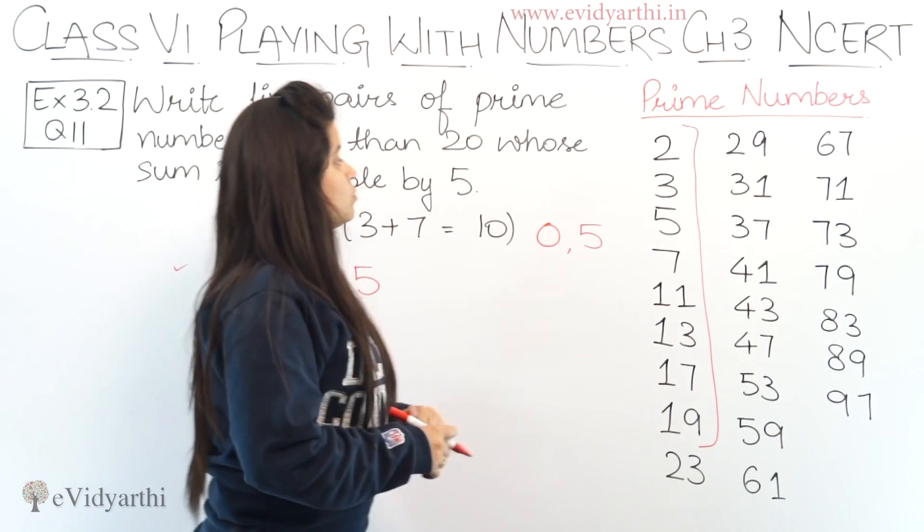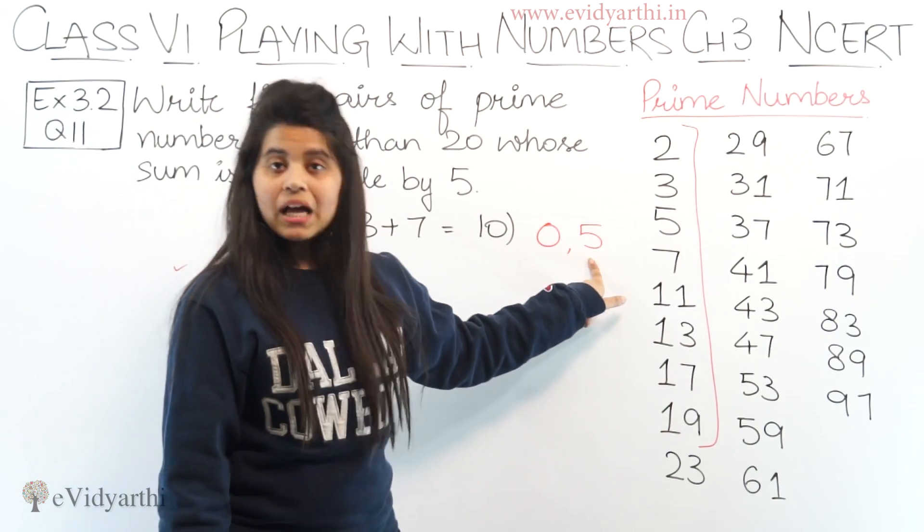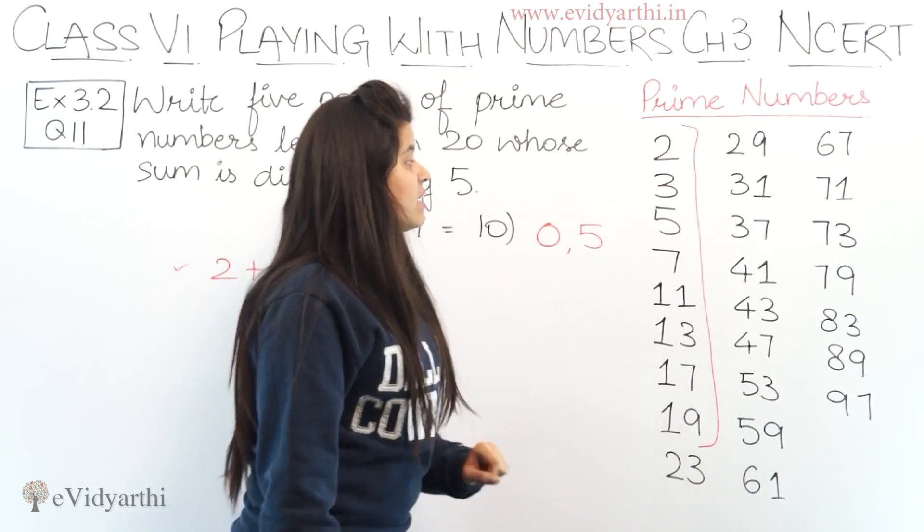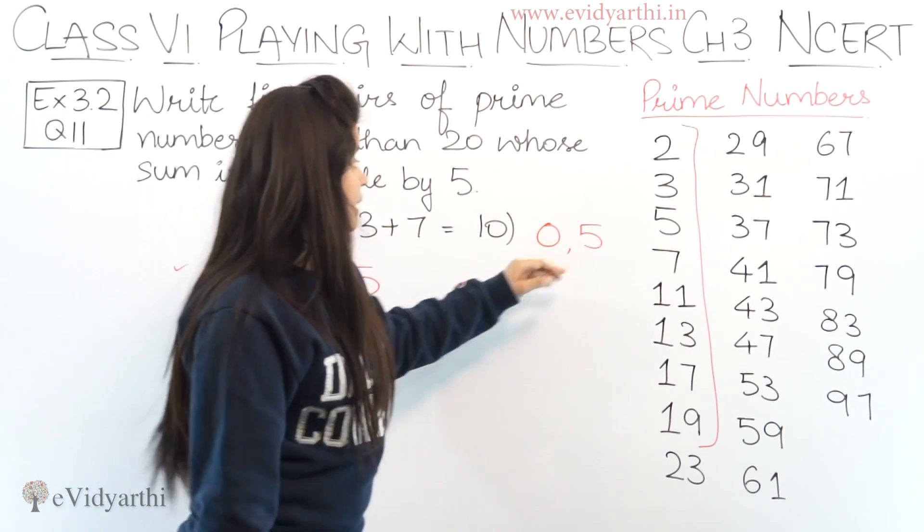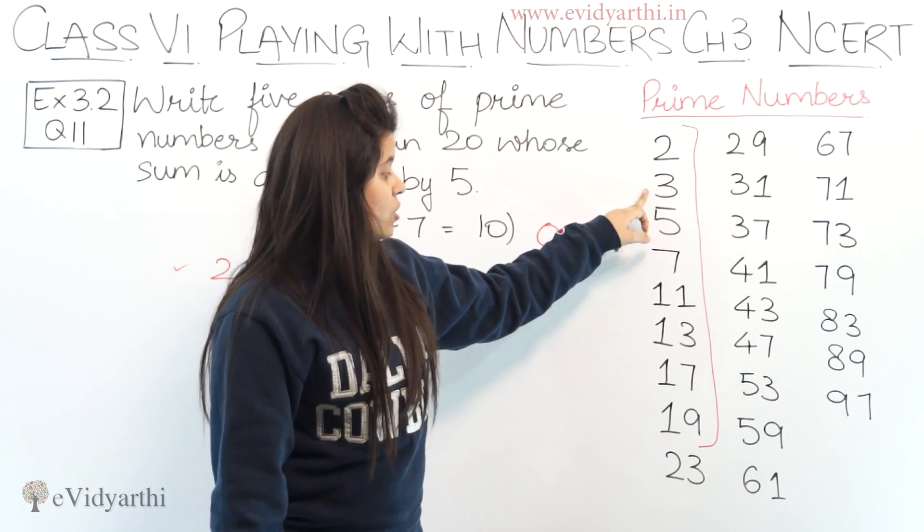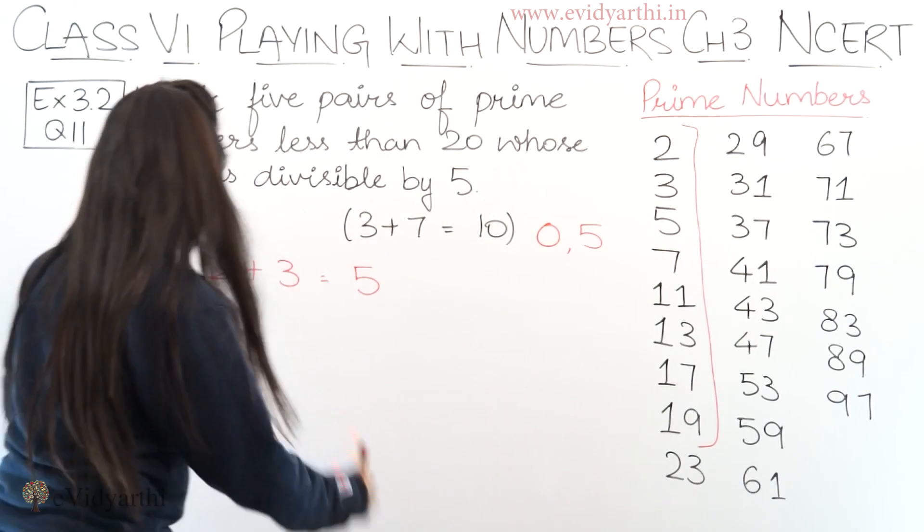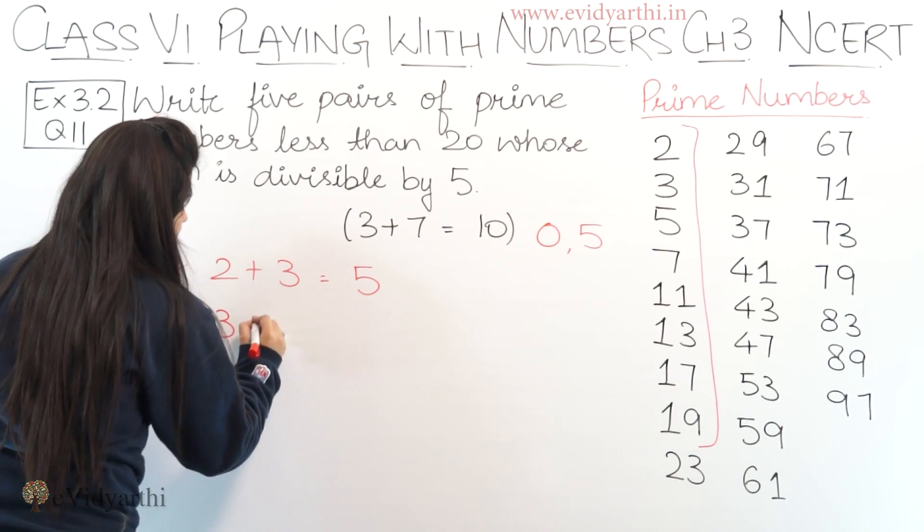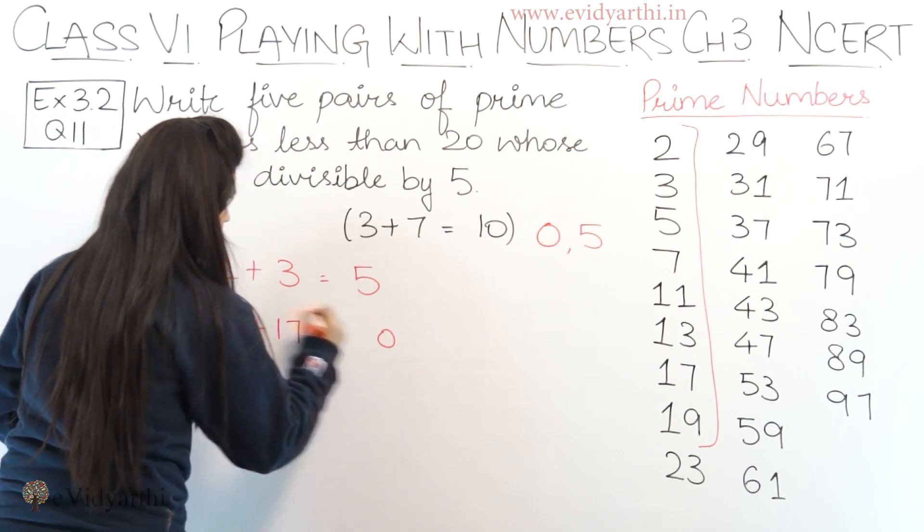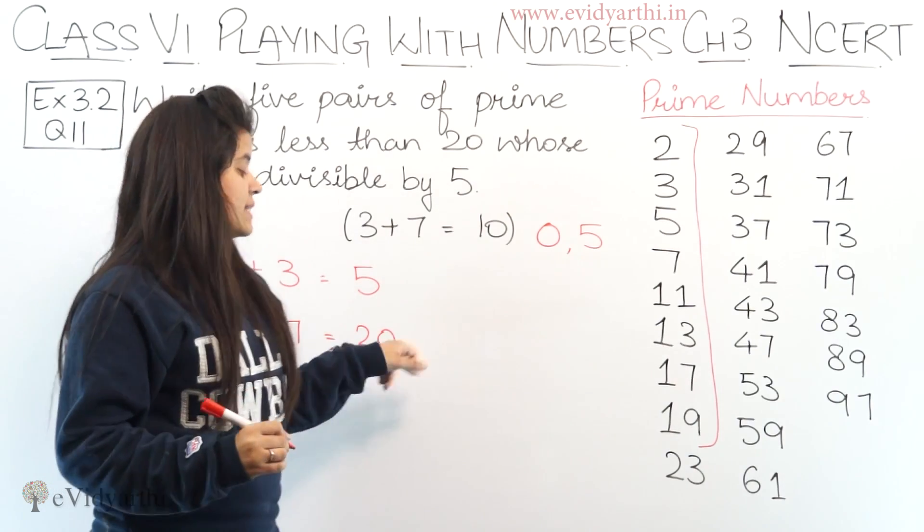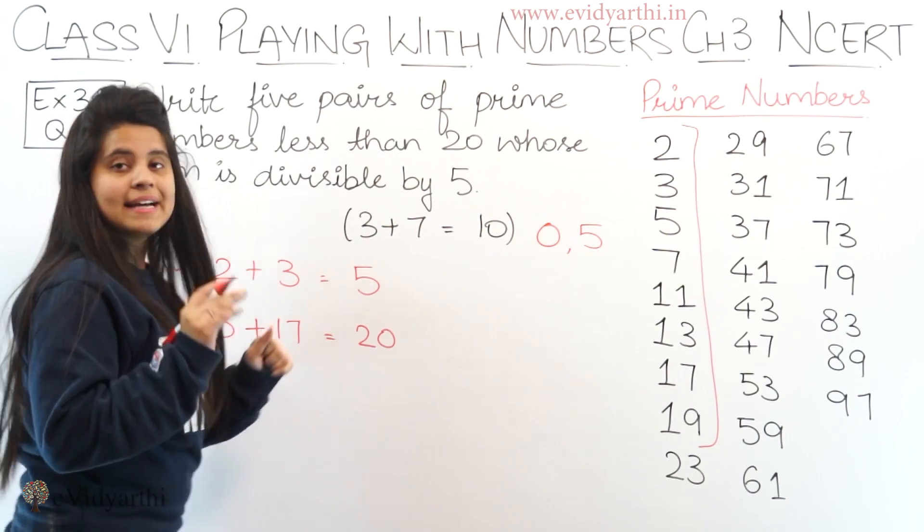Next we have, if we look at the second number, it's 3. Now what should we add with 3 so that the last digit becomes either 0 or 5? So with 3 we can add 7 so the last digit becomes 0. But 3 plus 7 is already given in the example. So instead of that we can take 17 because this will also give us 3 plus 7 equals 10, meaning last digit will be 0. So the second thing we can take is 3 plus 17.